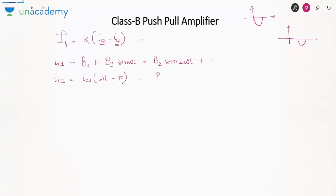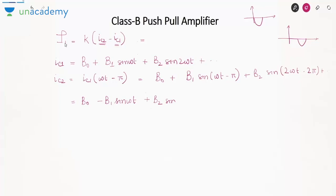During the positive cycle NPN will conduct, and during the negative cycle PNP will conduct. Each transistor conducts for one half cycle so we obtain a complete cycle at the output. Transistors are biased in cutoff mode, so no current will flow in the circuit in absence of AC signal. The current in cutoff region is 0. However, the disadvantage is that a dead zone is introduced, leading to crossover distortion.